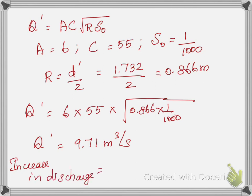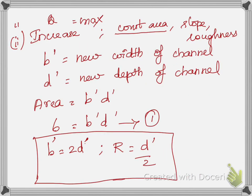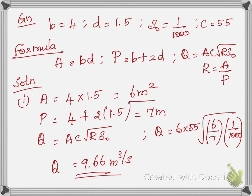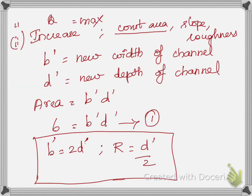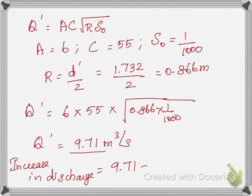Now for the increase in discharge: the most economical channel gives Q' = 9.71 m³/s and the original discharge was Q = 9.66 m³/s. The most economical section carries the maximum discharge, so the increase in discharge = Q' − Q = 9.71 − 9.66 = 0.05 m³/s. Hope you understood — thank you and happy learning.